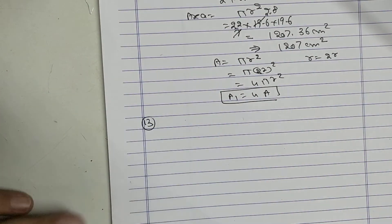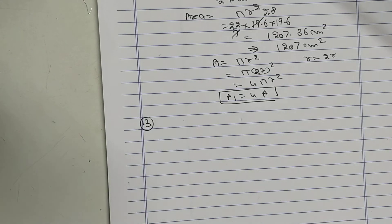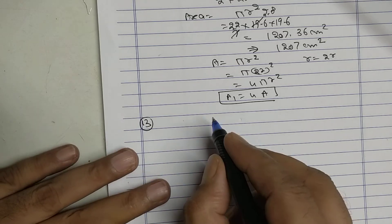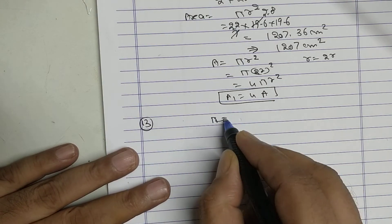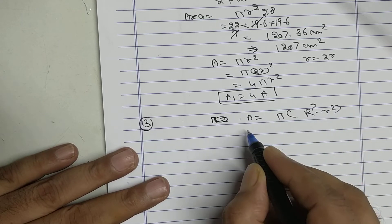Sum number 13. Area of ring is given and the outer radius given. Apply the formula: area equals π(R² - r²).